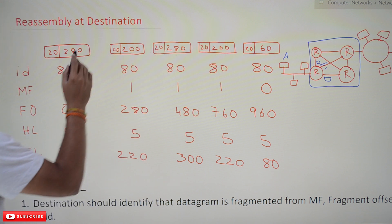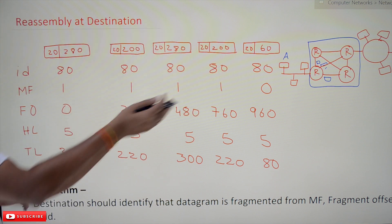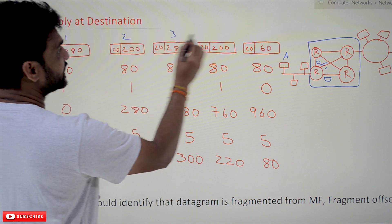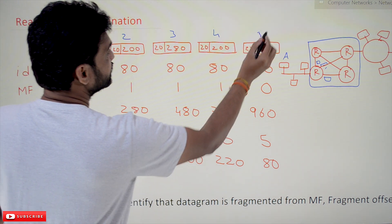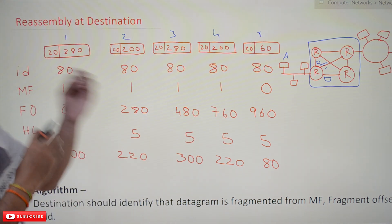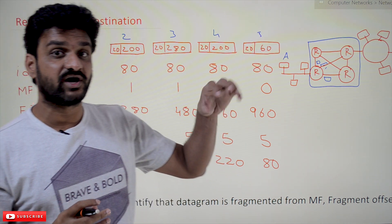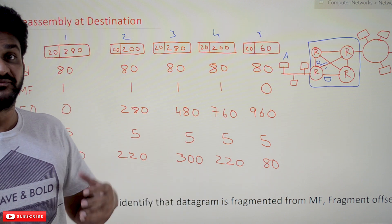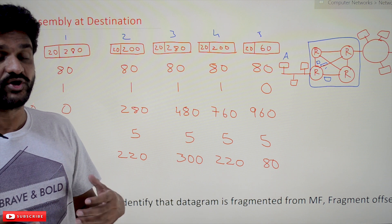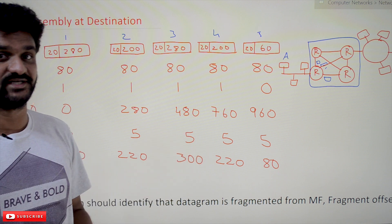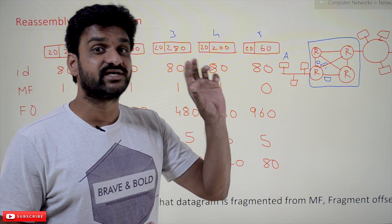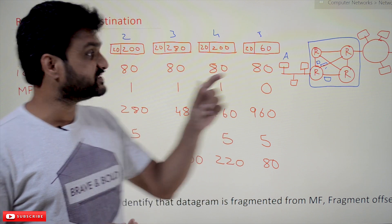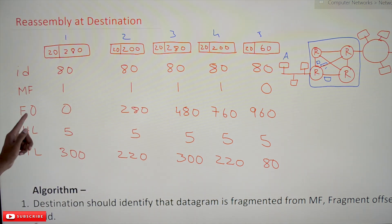These are the packets that are generated and these are the packets received at the receiver — first packet, second packet, third packet, fourth and fifth — and these packets are not received in order. Now, how the reassembly will take place at the destination: the two key fields that decide reassembly in an efficient way are MF and fragment offset.